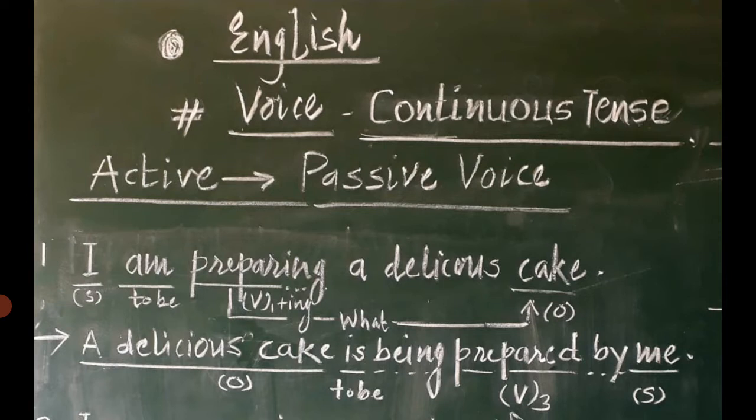Without making any mistake, we can start with the object — a delicious cake — in place of the subject. Afterwards, to be's representative is is kept there. Later on, being (be plus ing) is kept to maintain the continuous tense form. Then the action verb preparing is converted into past participle form prepared. Finally, the subject I, which is in pronoun form, is converted into its object form and associated with by — by me. A delicious cake is being prepared by me. This is how a continuous tense assertive sentence is converted into passive voice.